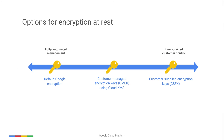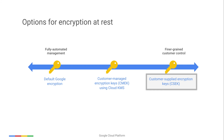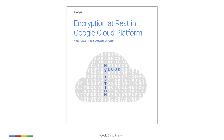For additional options, we offer a Cloud Key Management Service that lets you generate, use, rotate, and destroy the encryption keys that you manage. You can also bring your own encryption keys to the cloud with our customer-supplied encryption keys feature. To learn more, read our white paper, Encryption at Rest in Google Cloud Platform.